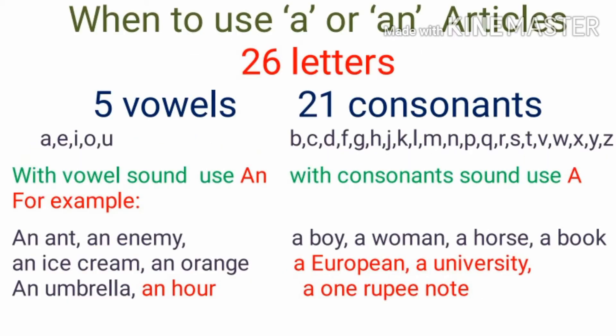So students, let's learn where we can use our indefinite articles a or an. As we all know there are 26 letters in English. 5 are vowels and 21 are consonants. The 5 vowels are a, e, i, o, u.